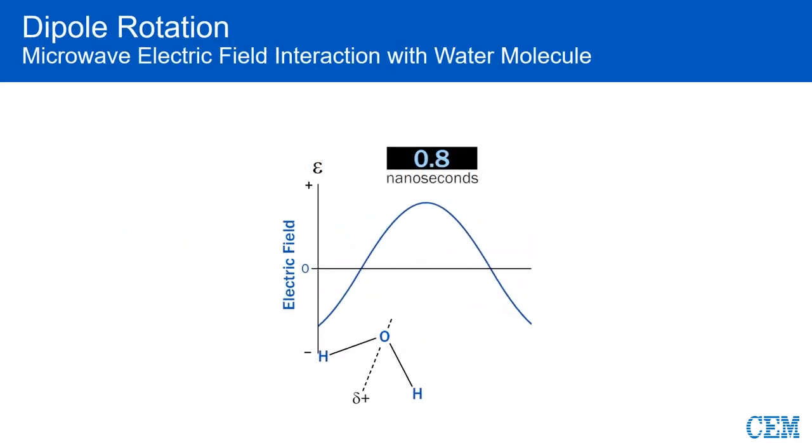We can illustrate dipole rotation using a water molecule and a sine wave, which illustrates the positive and negative side of the electromagnetic field. We show the water molecule at three points in time. At time zero, the water molecule is aligned with the field in that the negative electron of oxygen is aligned. However, just one-tenth of a nanosecond later, the field, which is moving at the speed of light, has shifted and the molecule is not aligned.